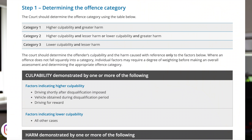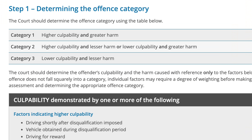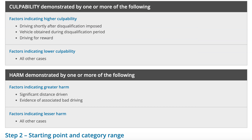Looking at the sentencing guidelines for driving whilst disqualified, the court aims to determine the offence category. There are three categories: Category 1 meaning higher culpability and greater harm; Category 2 meaning higher culpability and lesser harm, or alternatively lower culpability but greater harm; and Category 3 meaning lower culpability and lesser harm.